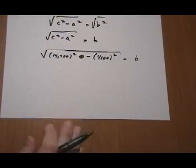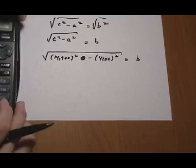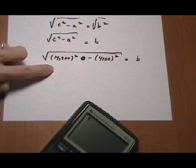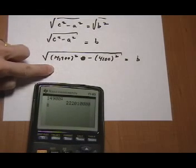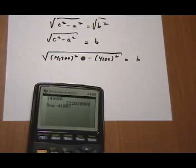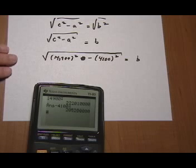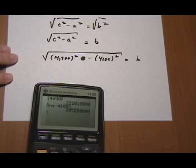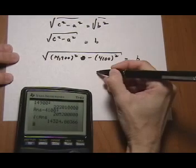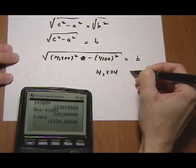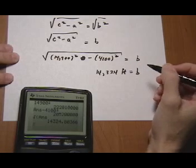Now we just plug it into our calculator. First I put in 14,900 and square it to get an answer. Then I subtract 4,100 and hit the X squared function, so that squares it and the subtraction gives an enormous number. Now I want to take the square root of that number — it depends on your calculator how you do this. You might need to use the square root function and input that entire number, or for this calculator I can use the square root function and input the previous answer. I get 14,324 equals B, and the answer is in feet because that's what the original dimensions are.